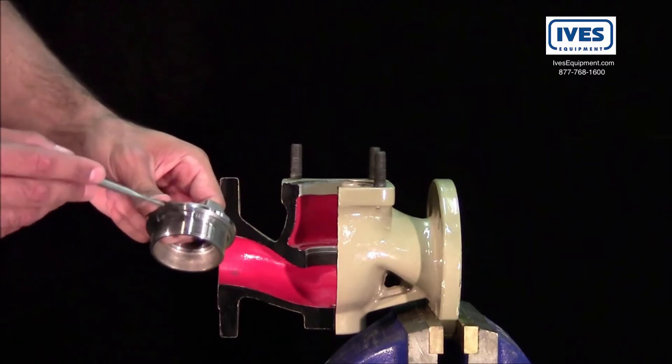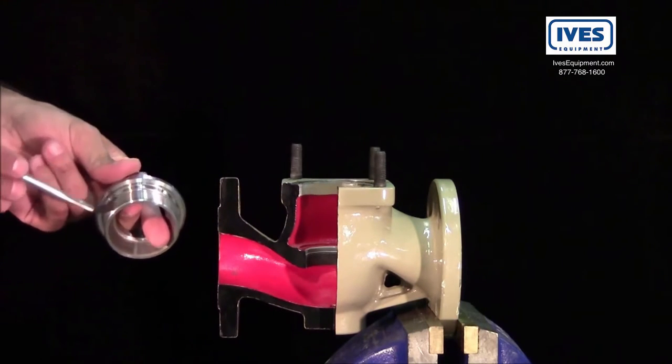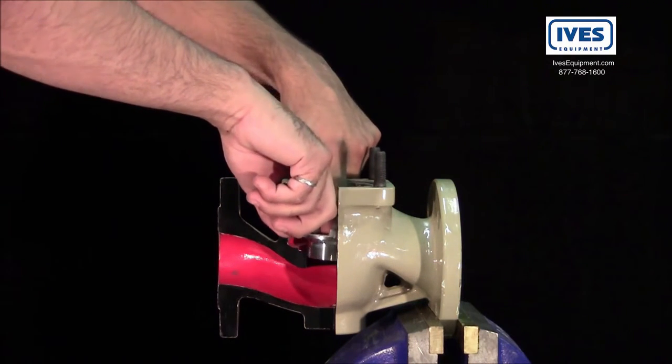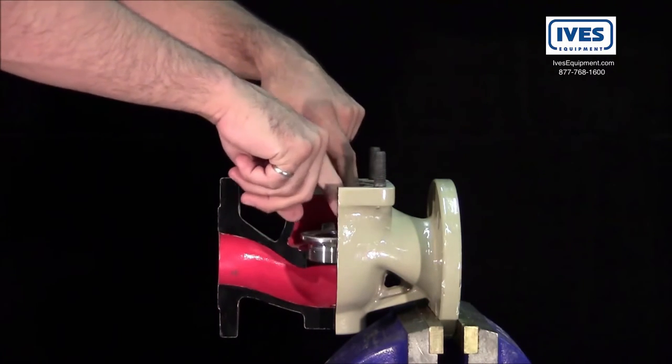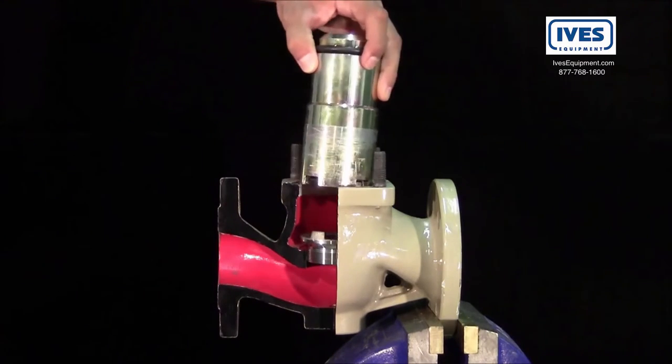We'll begin by lubricating the threads of the seat before inserting into the body. The seat will easily spin until it contacts the valve body.